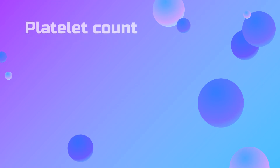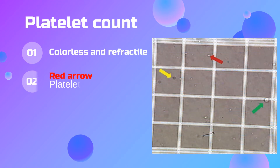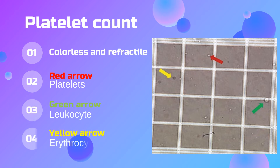When using the light microscope, it is important to identify platelets properly for an accurate platelet count. Platelets appear colorless and refractile. A larger colorless and refractile element may be a leukocyte, while a round but less refractile element is considered a red blood cell.